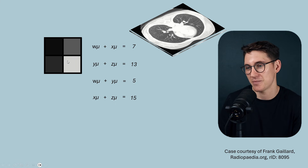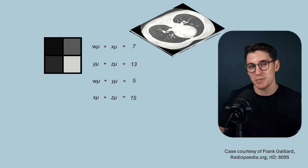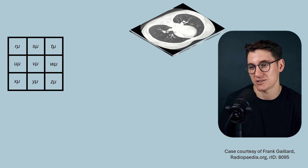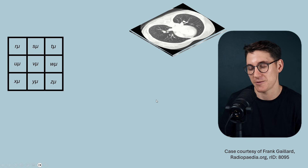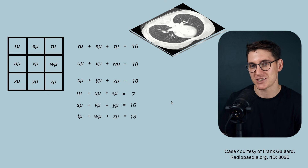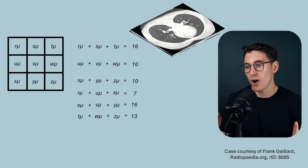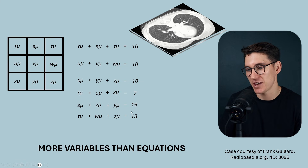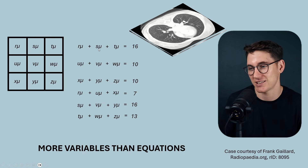We've created a very basic image. But in CT our image is 512 by 512 pixels — can this approach be extrapolated? If we increase the matrix size to three by three, we have nine variables. Taking a frontal and lateral creates only six separate equations. With six equations and nine variables, we have more variables than equations, so we cannot confidently calculate each variable — in fact there's an infinite number of solutions.